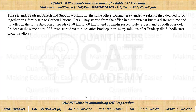I hope you all tried the question. Let's look at what is given. There are three friends — Pradeep, Suresh, and Subodh — working in the same office. During an extended weekend they decided to go on a family trip to Corbett National Park. An important learning here: the first two lines of the question are completely irrelevant. In exams, many questions look lengthy but the relevant information is actually very little.